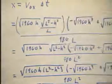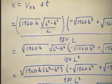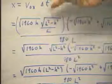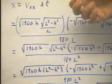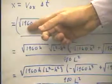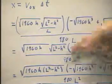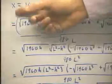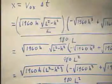x is v0x times delta t. Well, v0x, as we saw earlier, was the square root of 2 times 980 times h times the square root of l squared minus h squared over l. 2 times 980 gave us our 1960 here. So we have this, and that's just our old expression for v0x.